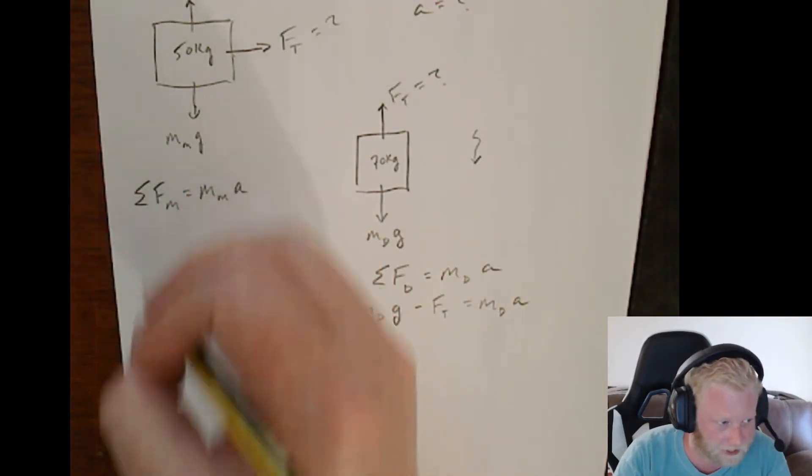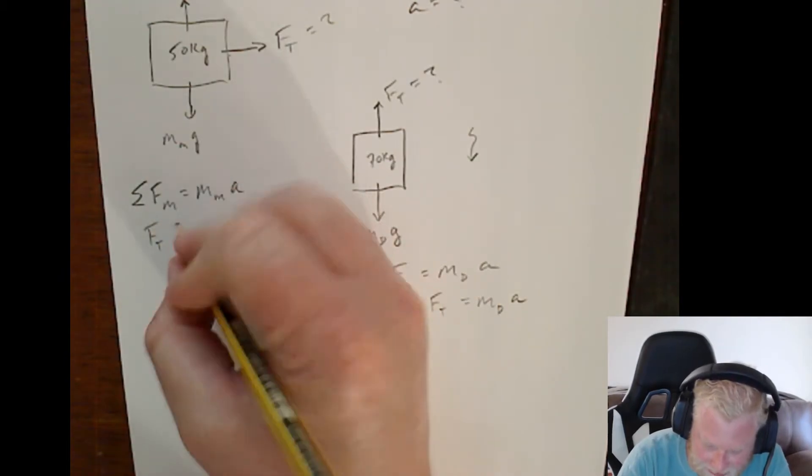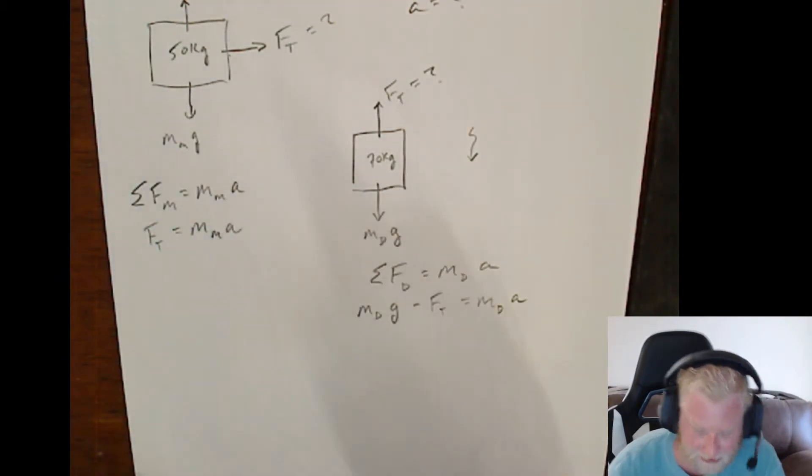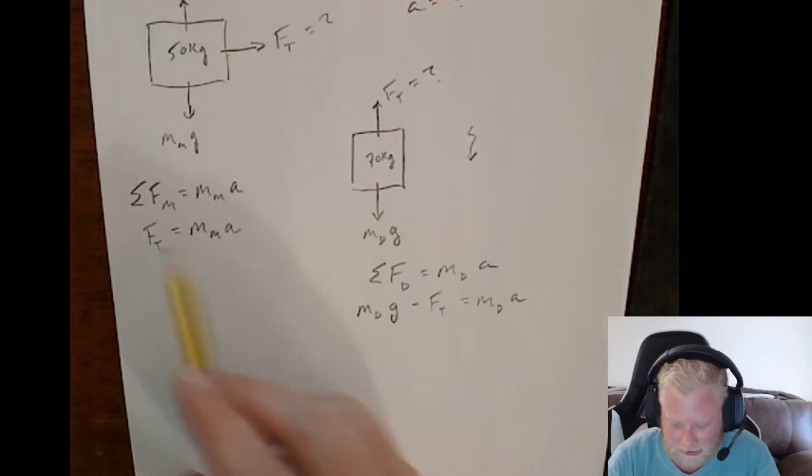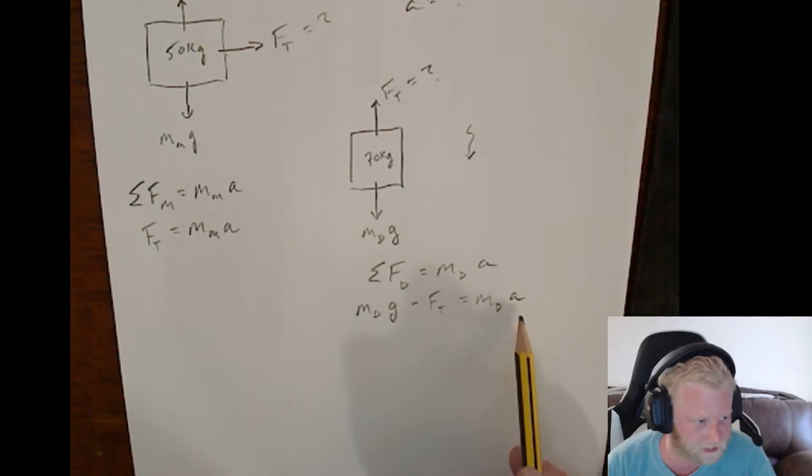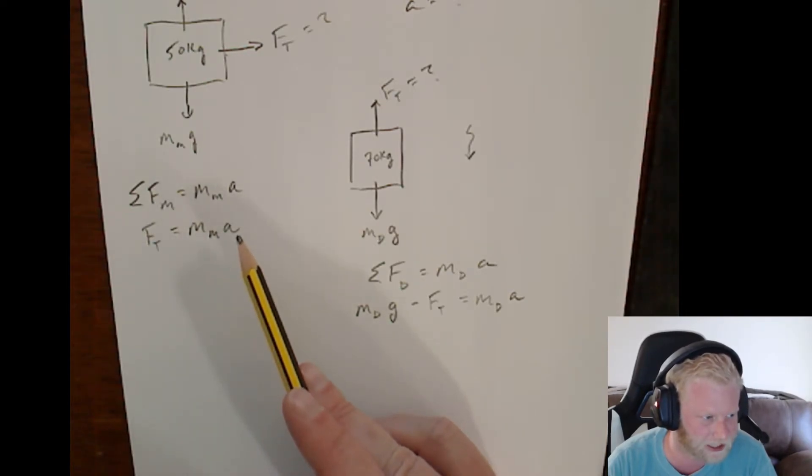Now, Mary, on the other hand, she's only got one force acting in the dimension of acceleration. So, force of tension equals mass of Mary times acceleration. Now, we've got two unknowns in each one of these equations: tension and acceleration. But we just put tension in terms of acceleration. So, we can go ahead and take mass of Mary times a and plug it in here for tension.